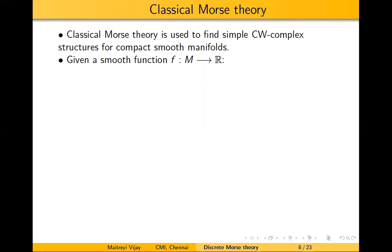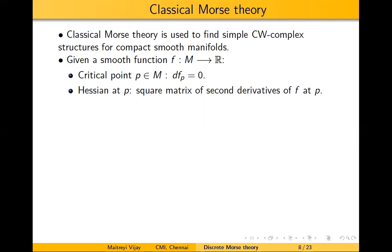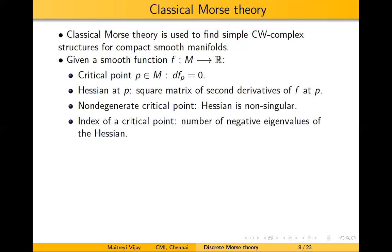Given a smooth function f from M to R, a critical point p in M is said to be critical if the derivative Df at p is zero. The Hessian matrix at p is the square matrix of second derivatives of f. A critical point is non-degenerate if the Hessian is non-singular, and its index is the number of negative eigenvalues of the Hessian. f is a Morse function if all the critical points are non-degenerate, i.e., the Hessian is non-singular for every critical point.